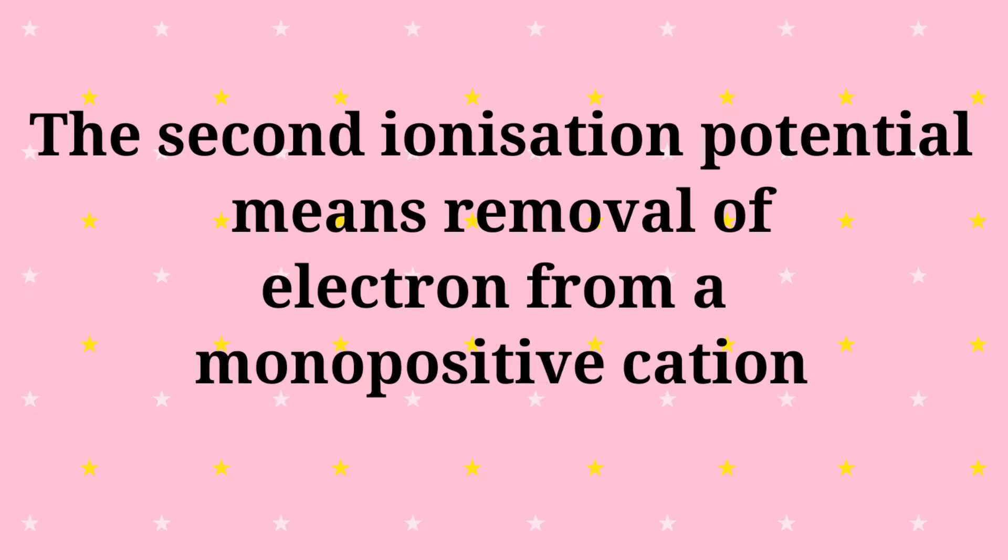So that element becomes a monopositive cation. We have to remove the second electron. This ionization potential is the second ionization potential. From the electronic configuration we can find out the correct increasing order of ionization potential.